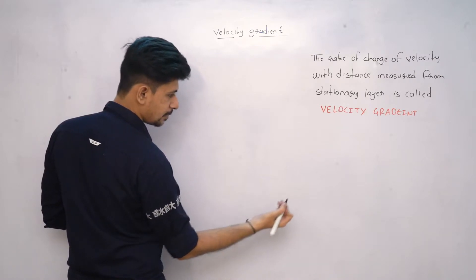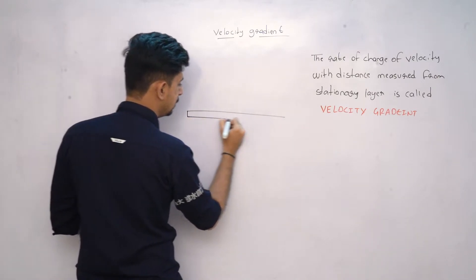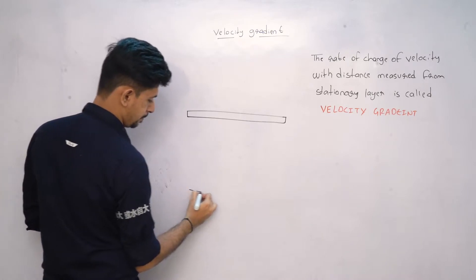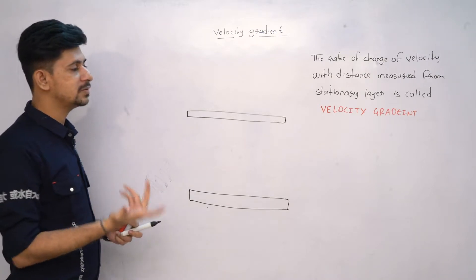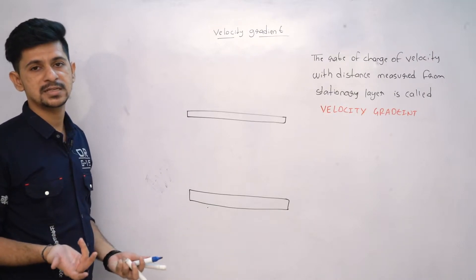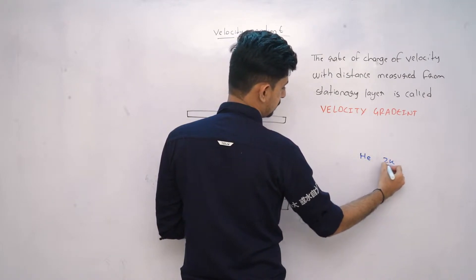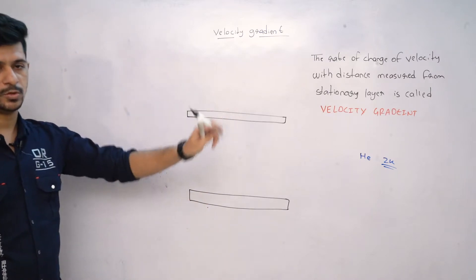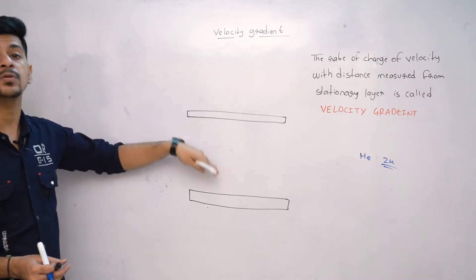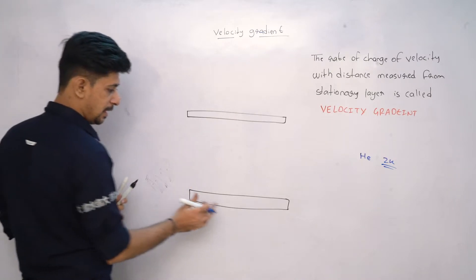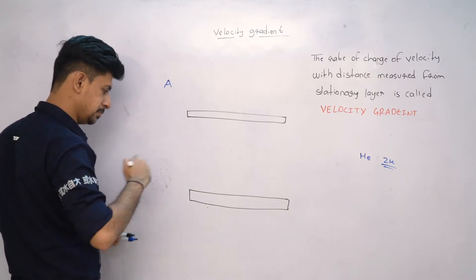Let me take two different cases in which we have two different fluids compared. One fluid is non-viscous — we have seen one fluid which is helium, it is almost non-viscous. So the difference is in the amount of viscosity in both of them. Let me name this A and the other one B — these two different fluids.